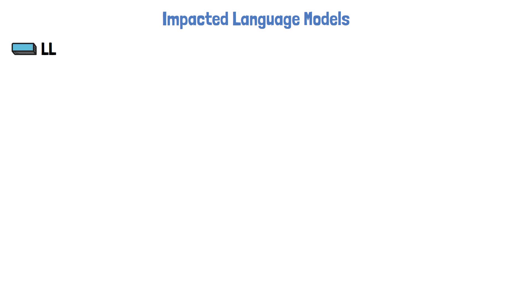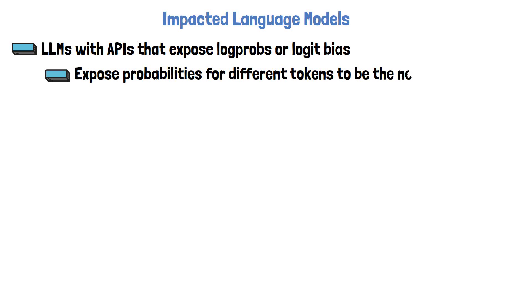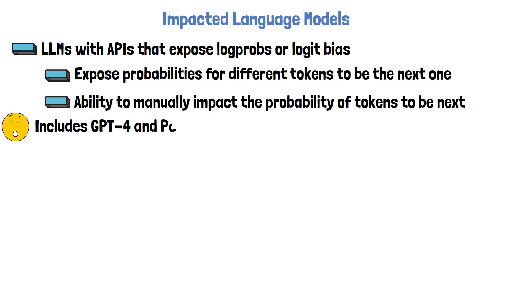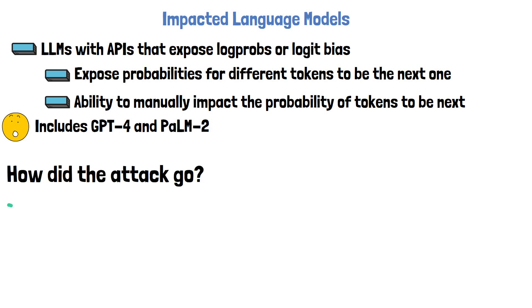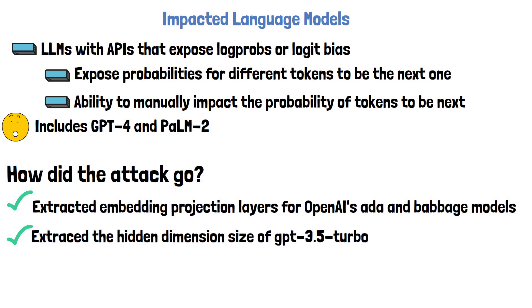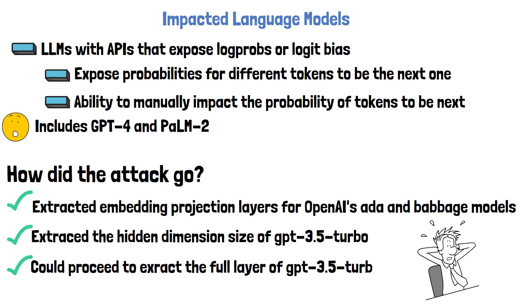The target for the attack presented in the paper is production language models accessible via APIs that expose log probabilities or a logit bias. Log probabilities means we get not just a generated token, but a list of tokens with their log probabilities, so we can learn which are the most possible next tokens. Logit bias means we can impact the probabilities of tokens we wish to control. These requirements in practice include multiple OpenAI models including GPT-4 and Google's PaLM-2. The researchers successfully extracted the entire embedding projection layer for two OpenAI language models and discovered the hidden dimension of GPT-3.5 Turbo, and could have extracted its full embedding projection layer for under $2000 in API queries.